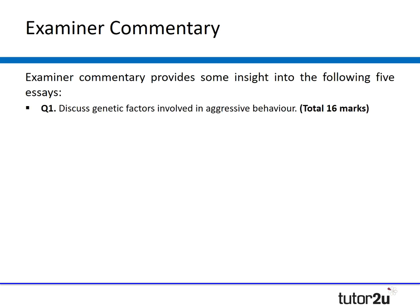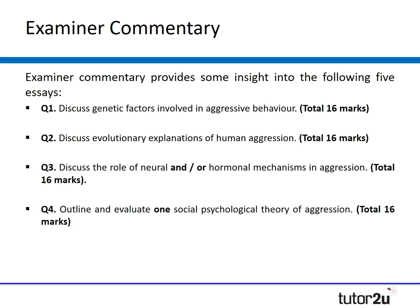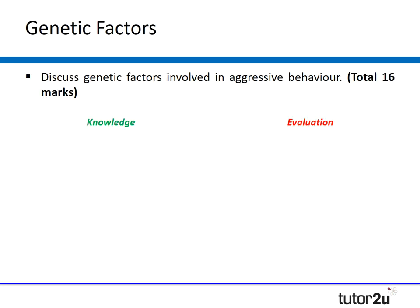What I think is really useful is going back to look at examiner commentary on past questions to identify errors students have historically made. We have five different questions to examine to work out what to avoid when teaching the aggression topic. The first question is: discuss genetic factors involved in aggressive behaviour. There are key points we can pick out from the examiner commentary.